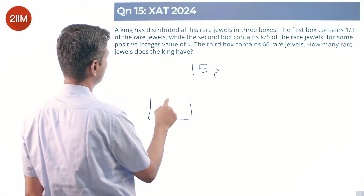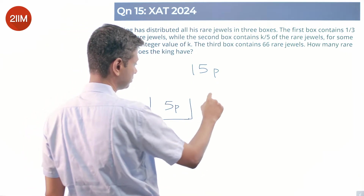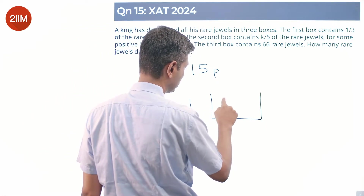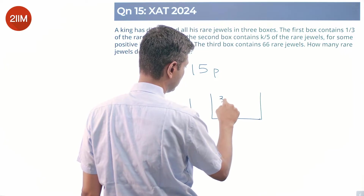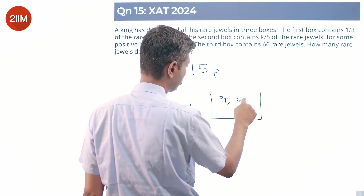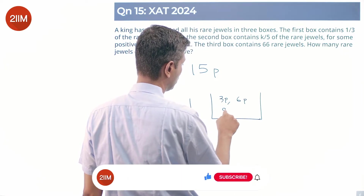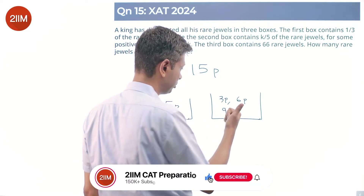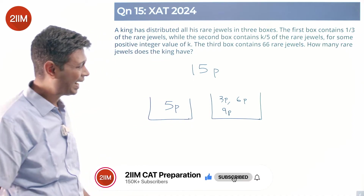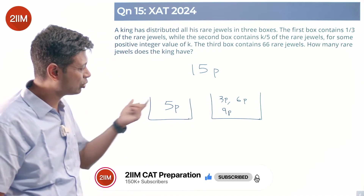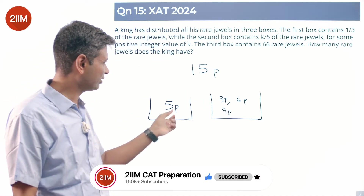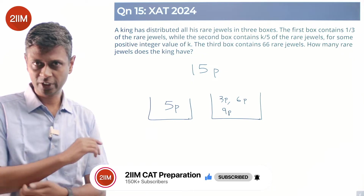The first box is one-third, so 5p is sitting inside box one. The second box is either 3p, 6p, or 9p — corresponding to k = 1/5, 2/5, or 3/5. If it were 12p, that would add up to more than 15p total, so k=4 is not possible.